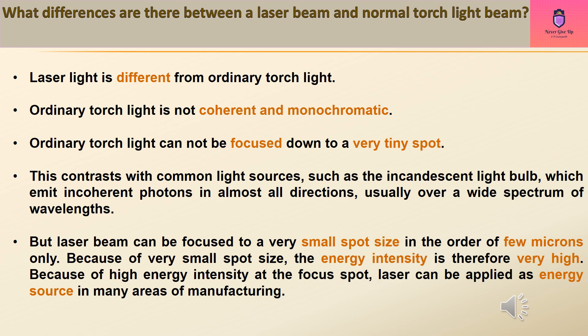Laser light is different from ordinary white light. Ordinary white light is not coherent and monochromatic. Ordinary white light cannot be focused down to a very tiny spot. This contrasts with common light sources, such as the incandescent light bulb, which emit incoherent photons in almost all directions, usually over a wide spectrum of wavelengths. But laser beam can be focused to a very small spot size in the order of few microns only.